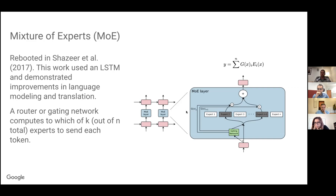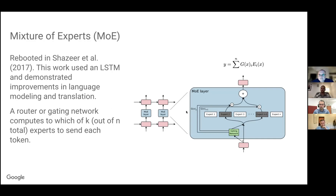With data parallelism, you have N cores, partition your data over N cores, and replicate the model weights across all cores. With mixture of expert layers, typically we have one expert per data parallelism core, so each core gets a unique set of weights. When you do the gating network, each token is communicated to the correct expert and then communicated back to its original core.